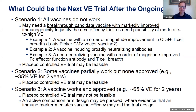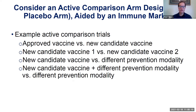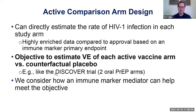I'm really going to focus on the active comparison design setting, where I'll consider two approaches for assessing vaccine VE versus counterfactual placebo based on an immune marker mediator. These active comparison trials could have many shapes: an approved vaccine versus a new candidate vaccine, head-to-head new candidate vaccines, or incorporation of a non-vaccine prevention modality. In these designs we can directly estimate the rate of HIV infection in each vaccine arm — already highly enriched data compared to what's been used for some past approvals — but we have the challenge of estimating vaccine VE against a counterfactual placebo without having a placebo arm. This structure is the same as the DISCOVER trial, which had two oral PrEP arms.